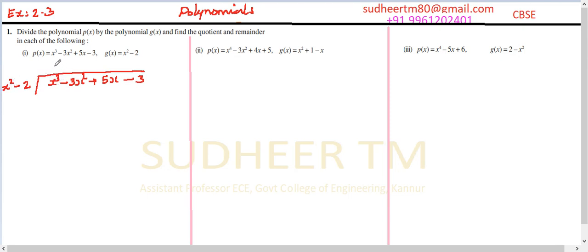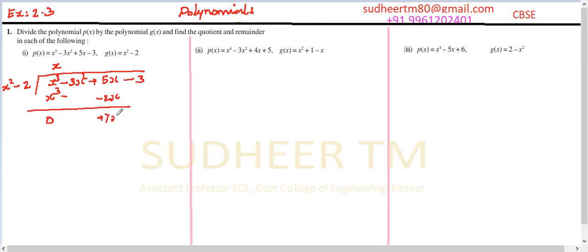Now x³ divided by x² is x. Then multiply: x into x² is x³, and minus 2 into x is minus 2x. Our coefficient is coming as x raised to 1, so you should write minus 2x corresponding to 5x. Then the next step is to subtract, as in the normal division method. x³ minus x³ is 0, and 5x minus minus 2x is plus 7x, and we have 0x² and minus 3x².